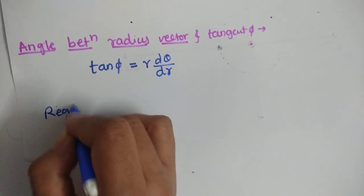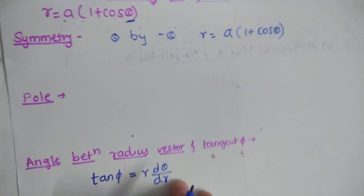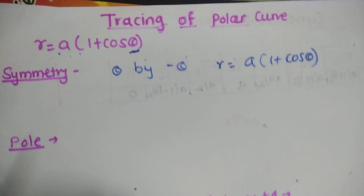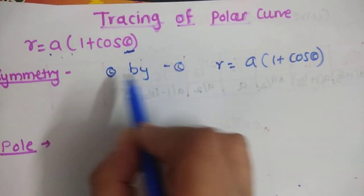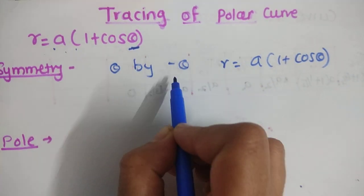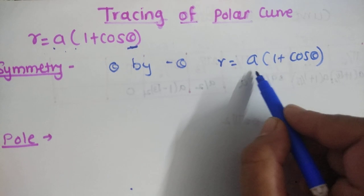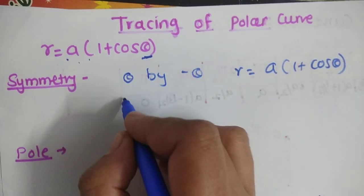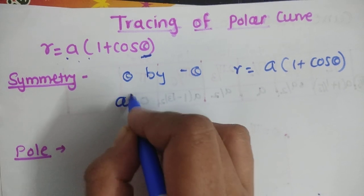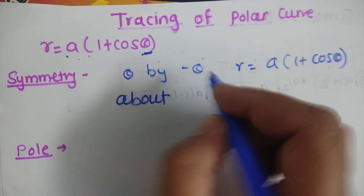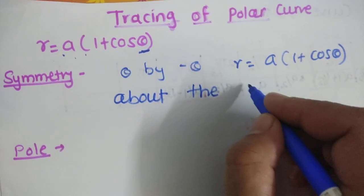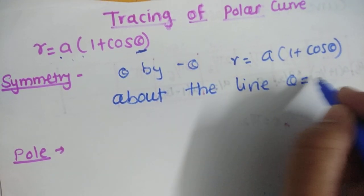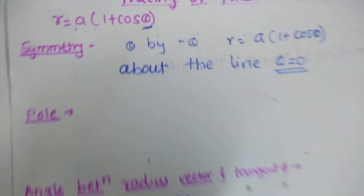On replacing θ by −θ, the curve remains the same, that is r = a(1 + cos θ). So the curve is symmetric about the initial line θ = 0.